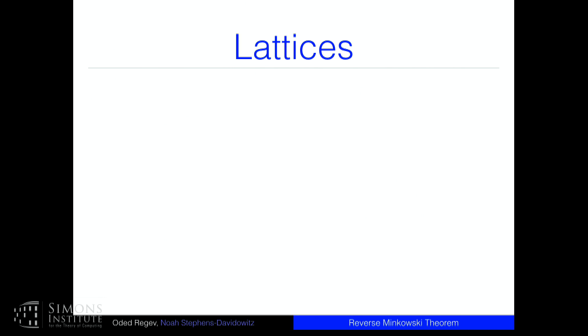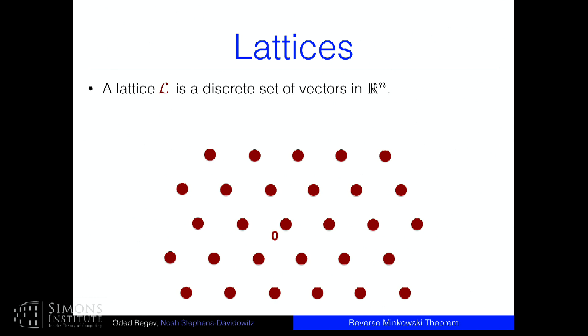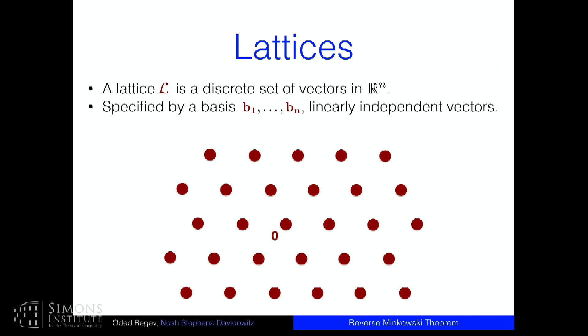Before I tell you what a reverse Minkowski theorem is, let me tell you what Minkowski's theorem is — it's so beautiful you might as well see it again. A lattice is a discrete set of vectors in n-dimensional space. Here's a two-dimensional lattice. It's specified by a basis b1 through bn — linearly independent vectors — and the lattice itself is the set of integer linear combinations of the basis vectors: a nice, beautiful discrete periodic set in n-dimensional space.